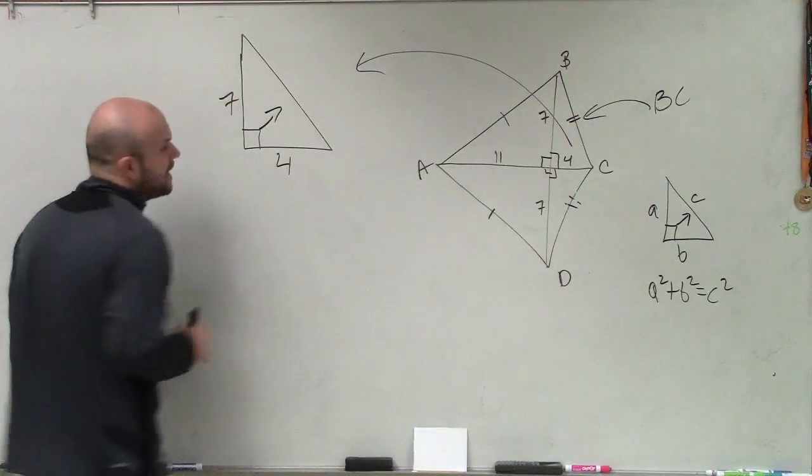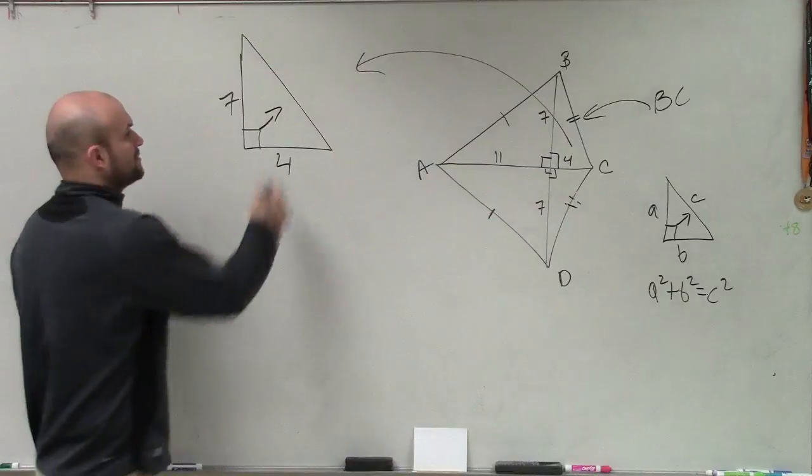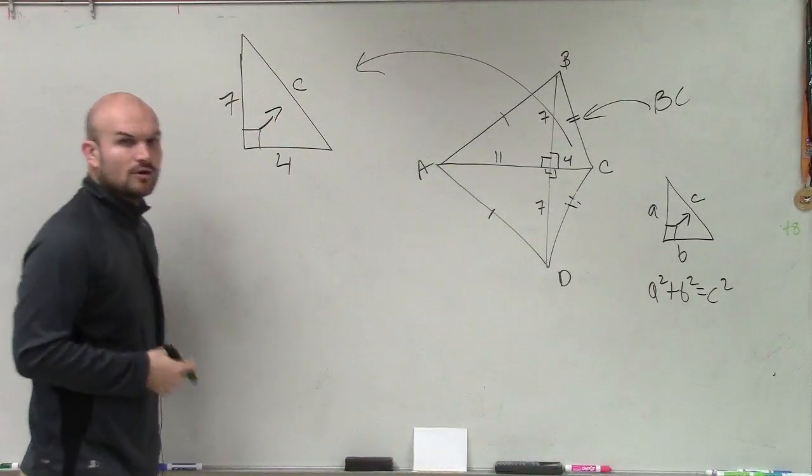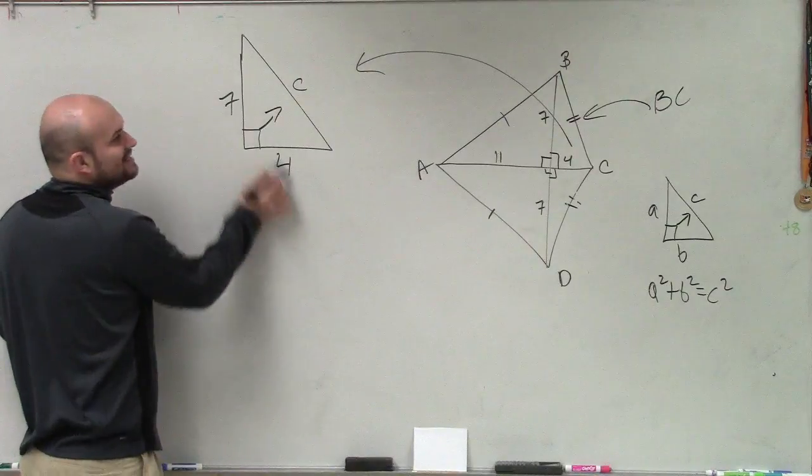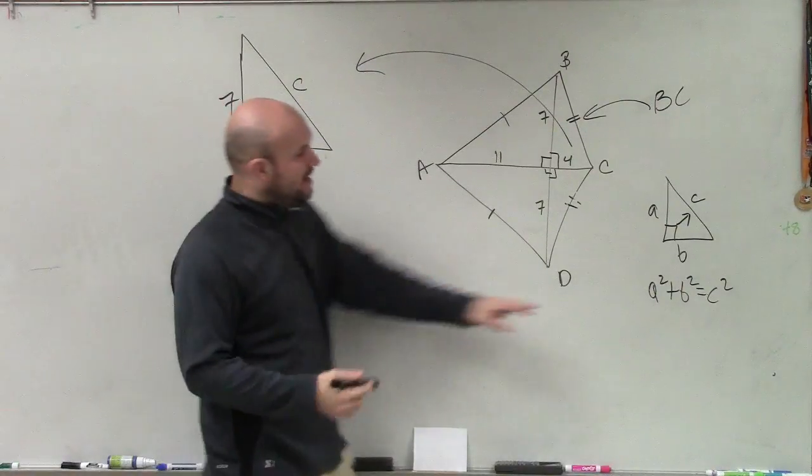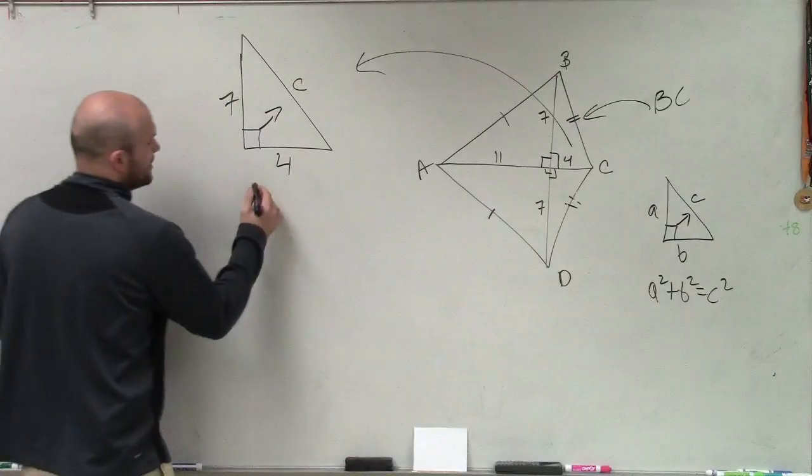I do not know what my hypotenuse is. We're going to call it c, or you could call it BC because that's actually the length you're trying to find. But these two are my legs. Them squared adds up to my c squared.